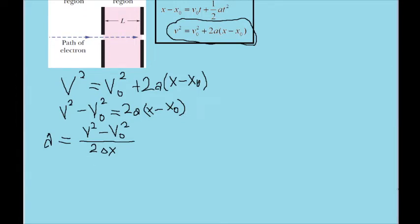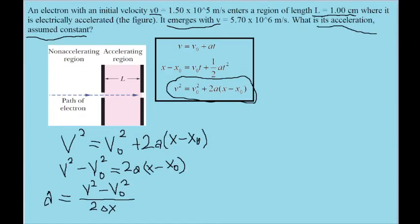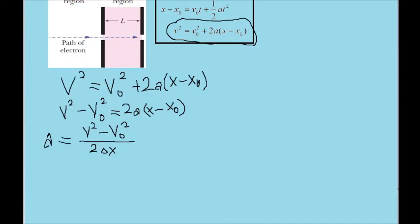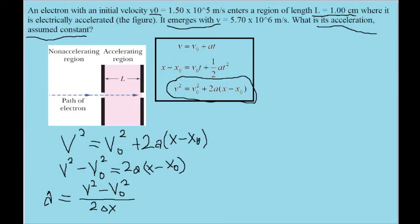I've shortened the x minus x-naught as just delta x, since the problem only gives us the displacement in terms of a single length anyways. But this is the equation we'll want to use, so now all we need to do is plug these numbers into the equation, the numbers the problem gives us.